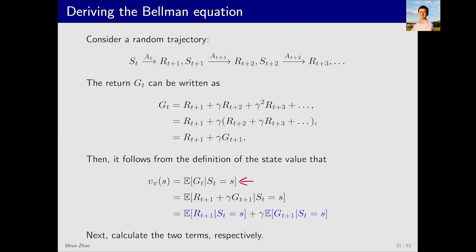This is the definition of state value that we introduced. We divide gt into two parts, immediate and future rewards. Because the addition inside the expectation can be separated, we thus obtain two expectations. Next, we analyze these two expectations separately to calculate the two terms. By doing this, we can derive the Bellman equation.